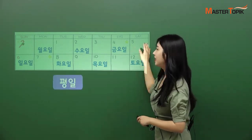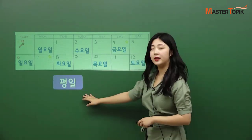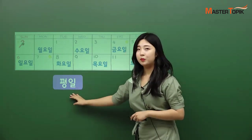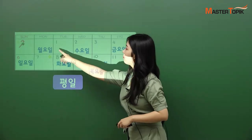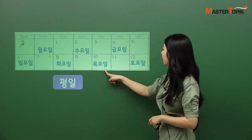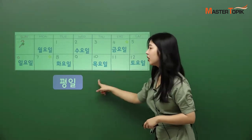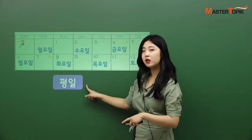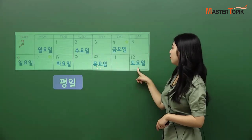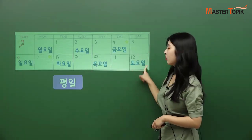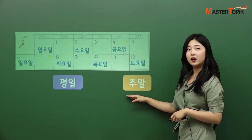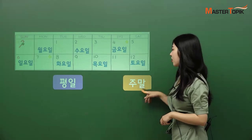Among these days, we call the weekdays as 평일 in Korean. 평일. So, 월요일, 화요일, 수요일, 목요일, 금요일 are included — they are 평일. What about 토요일 and 일요일? Where do they belong to? They are 주말 — weekend. And the others are 평일.